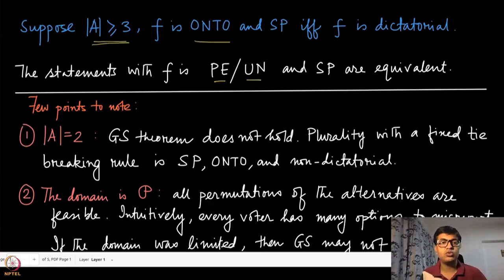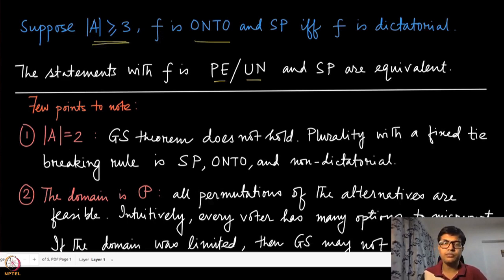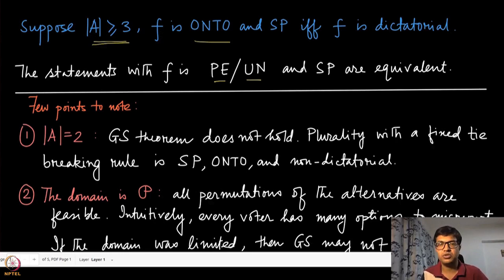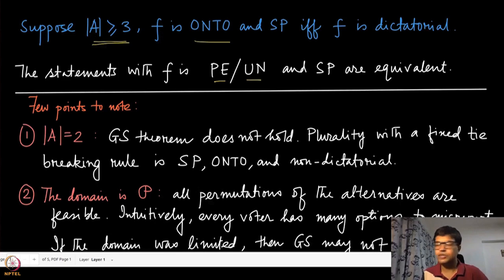If you have two alternatives, then we know that there exist certain onto and strategy-proof mechanisms — for instance, plurality or any scoring rule-based mechanisms that we have discussed before. They are all non-dictatorial social choice functions yet they are onto and strategy-proof. So the Gibbard-Satterthwaite result does not hold when you have two alternatives.